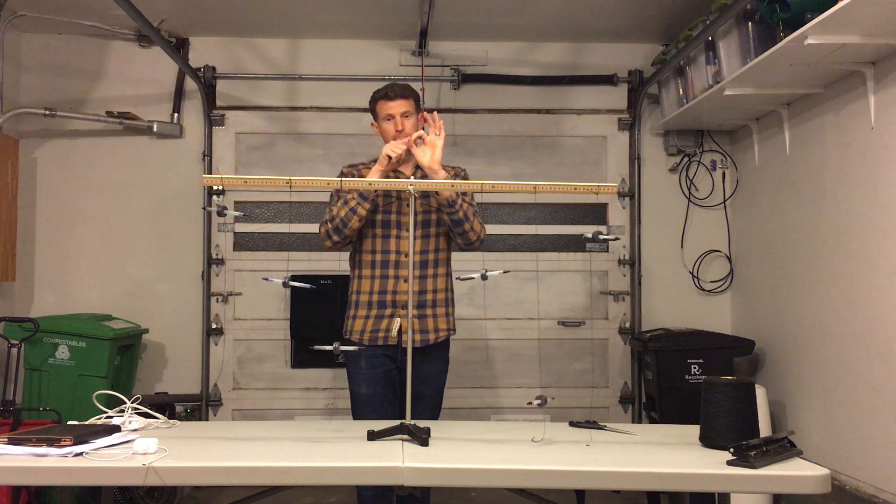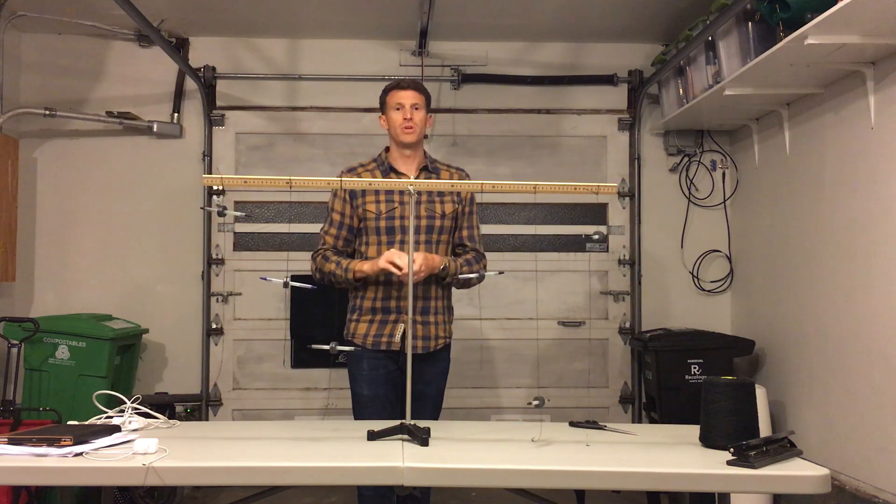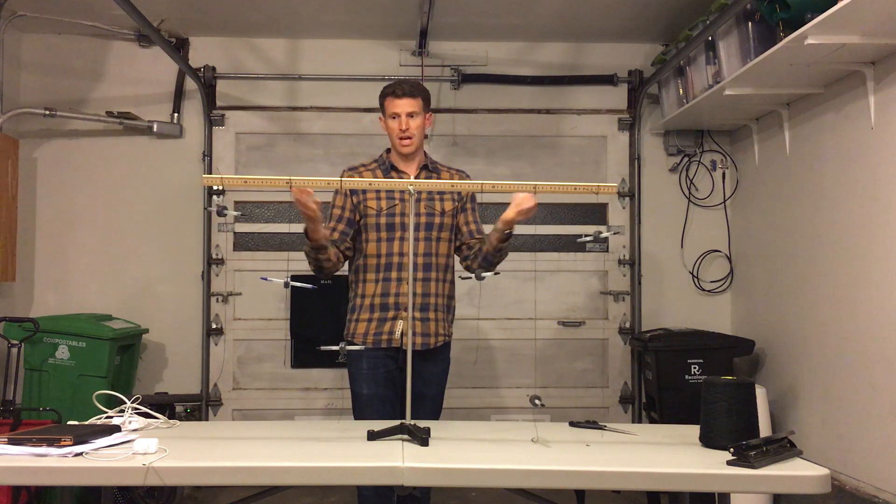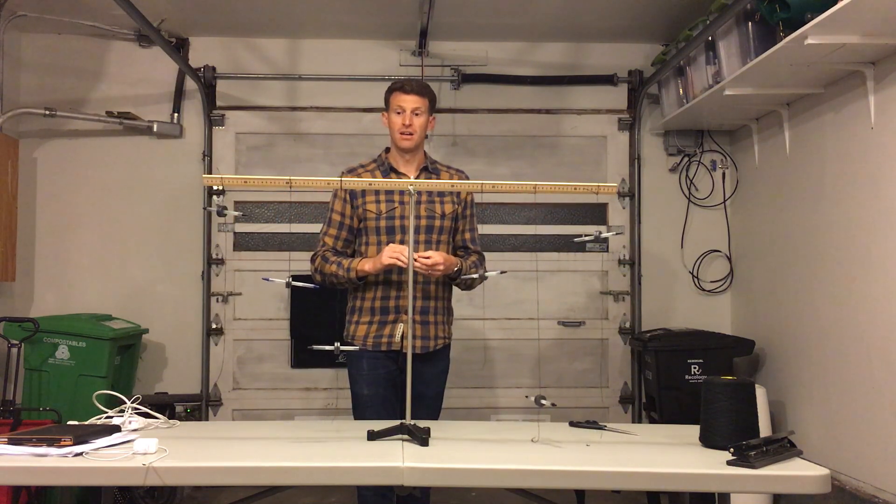Inside every compass is a magnetized little piece of metal that aligns itself north-south with the Earth's magnetic field. And so this is a magnetic mobile which is really just a bunch of hanging compasses.